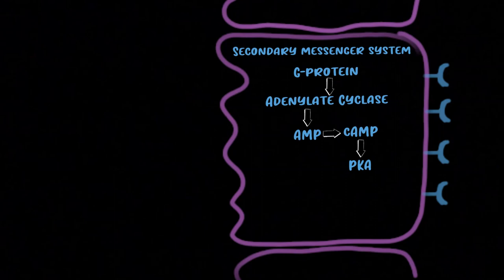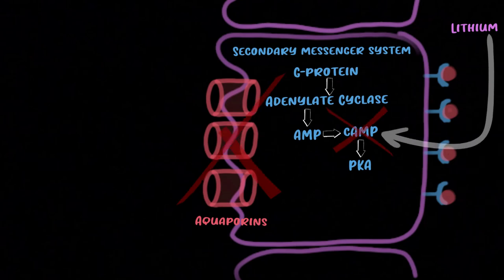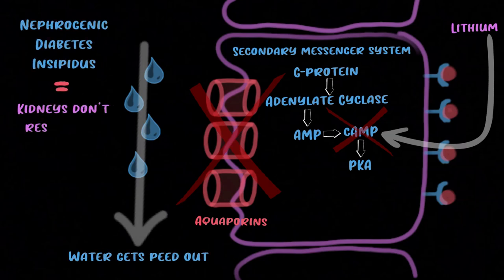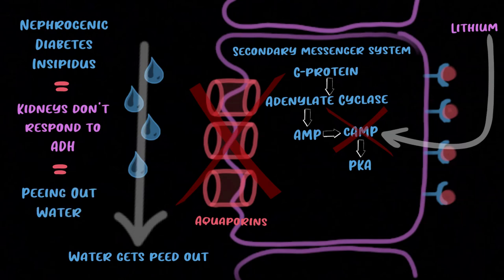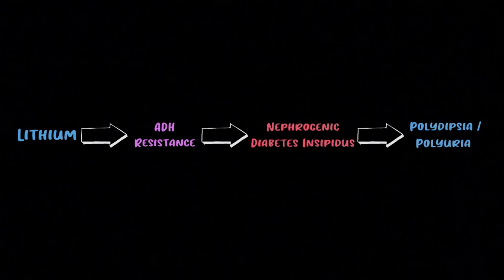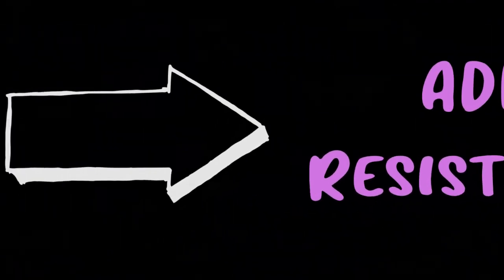This is where lithium causes its problem. We don't fully know lithium's mechanism of action, but the classic phrase is that it modulates secondary messenger systems. Lithium enters the collecting duct cells and interferes with ADH's ability to increase water permeability. That's the core of nephrogenic diabetes insipidus: an improper response — or resistance — to ADH, leading to decreased ability of the kidney to concentrate urine. Lithium ingestion causes ADH resistance, which leads to nephrogenic diabetes insipidus, polydipsia, and polyuria.